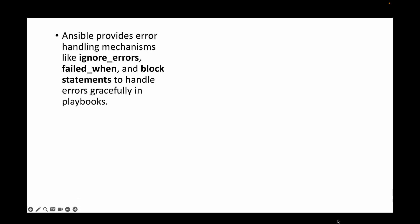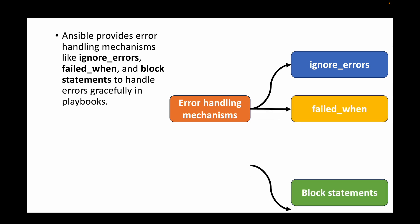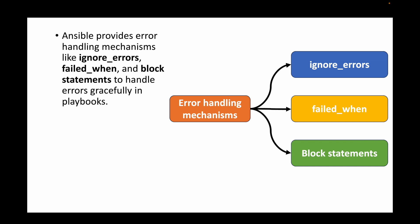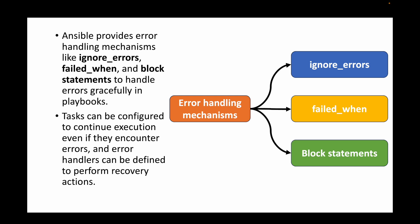The next question is: how do you handle error handling and recovery in Ansible playbooks? Ansible provides several mechanisms for graceful error handling. Options like ignore_errors, failed_when, and block statements allow you to handle errors in the playbook. ignore_errors lets you skip known errors; failed_when validates and fails a task based on conditions. Tasks can be configured to continue execution even when errors occur, and error handlers can be defined to perform recovery actions.